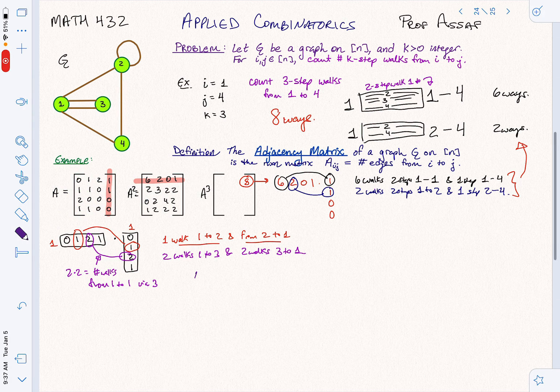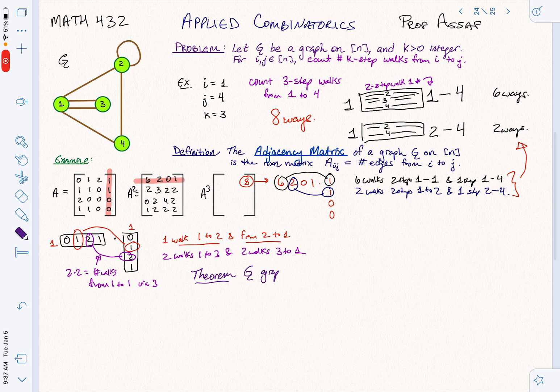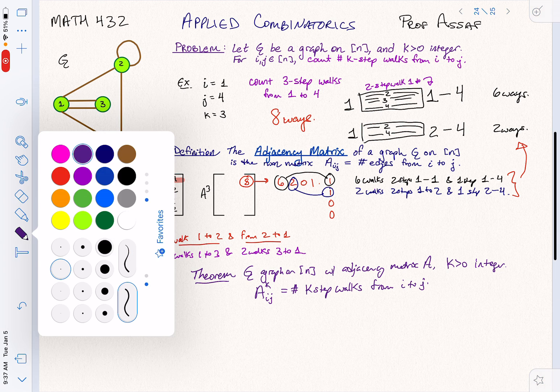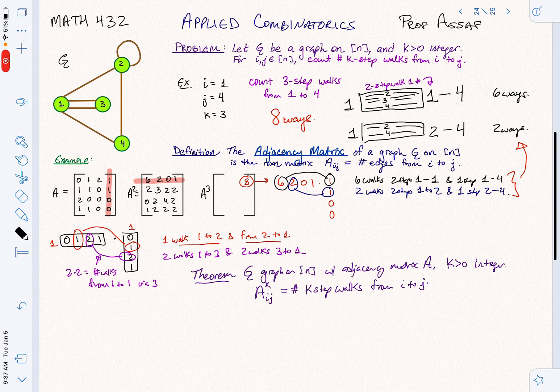So let's write down the theorem. So the theorem that we have is for G, a graph on N with adjacency matrix A and K greater than or equal to zero an integer, A to the K, the IJth entry is the number of K step walks from I to J. And why is that? Well, we've kind of explained the proof. It's because of matrix multiplication. But let's make that a little more rigorous.